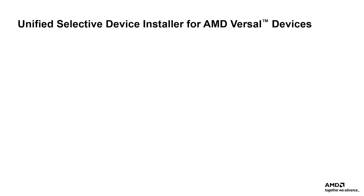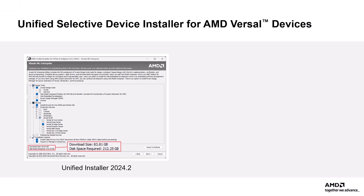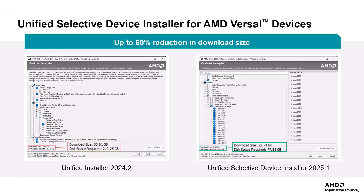With this update, you can now select specific AMD Versal devices for installation rather than downloading the entire portfolio. In AMD Vivado 2024.2, downloading all devices from the Versal AI Edge series required around 83GB of download size and 212GB of disk space. With USDI, even when selecting all devices from the Versal AI Edge series, the download size is reduced to just 22GB and disk space drops to 77GB — a 60% reduction in download size alone. As a result, installation times are faster and you'll save valuable disk space, improving both setup efficiency and system performance.